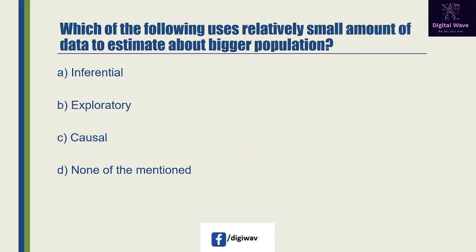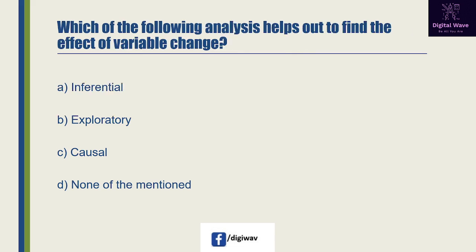Next question: which of the following uses a relatively small amount of data to estimate about a bigger population? Option A is 'inferential', option B is 'exploratory', option C is 'causal', and the last option is none of the mentioned. The right answer will be A, because inferential statistics is concerned about making predictions or inferences about a population from observation and analysis of a sample.